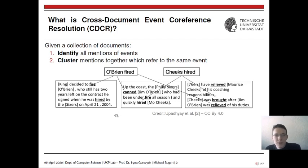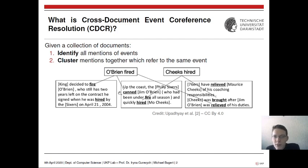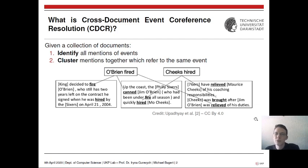The second step is to cluster all these mentions together so that every cluster refers to the same event. Here's an example with three documents. The first starts with 'King decided to fire O'Brien' — 'fire' is the action, King and O'Brien are participants. The second document has 'Philly Sixers canned Jim O'Brien,' a differently phrased reference to the same event. A third document says 'Jim O'Brien was relieved of his duties.'